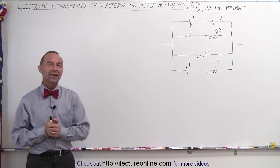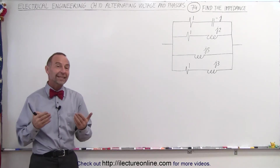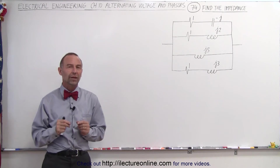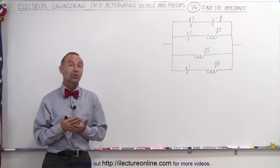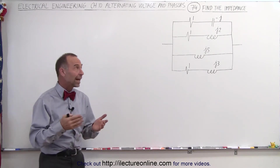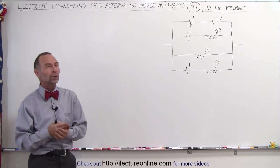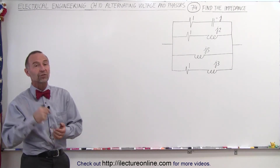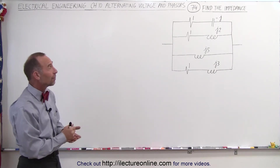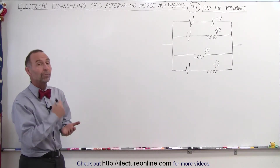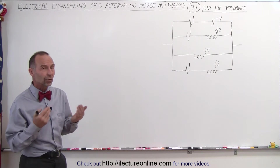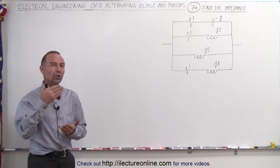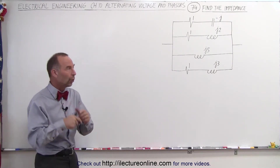Welcome to ElectronLine. We've been calculating impedances with just two components and two branches. But what happens when we have more than two branches? We can no longer use the product over the sum method. So here we have an example where there are four branches, and to find the total impedance we have to use the one-over-the-one-over rule.